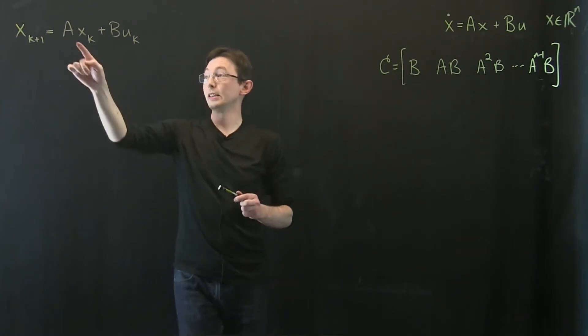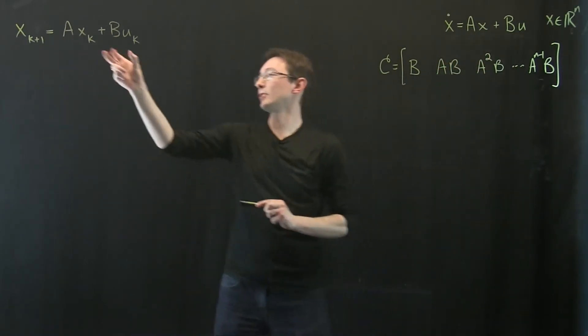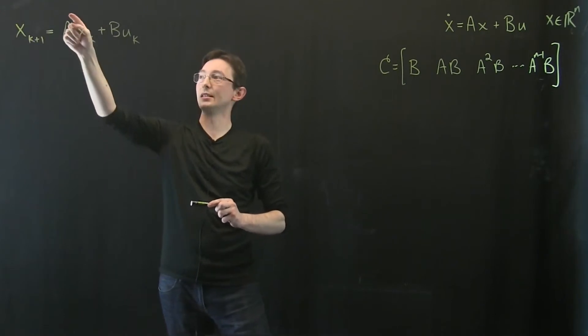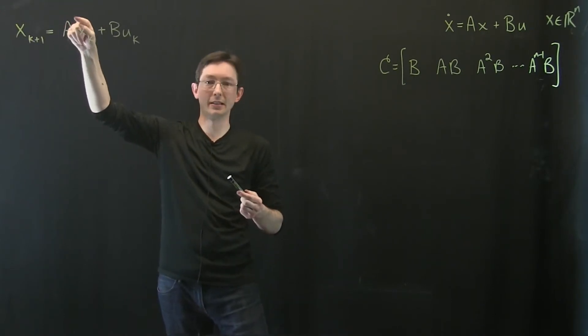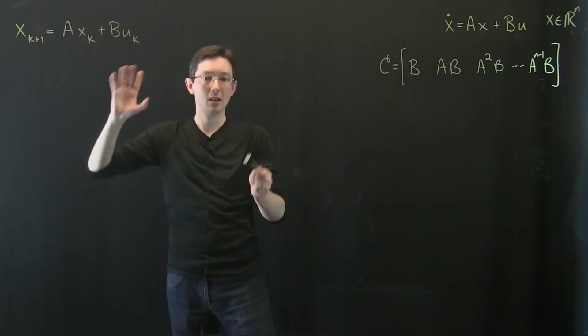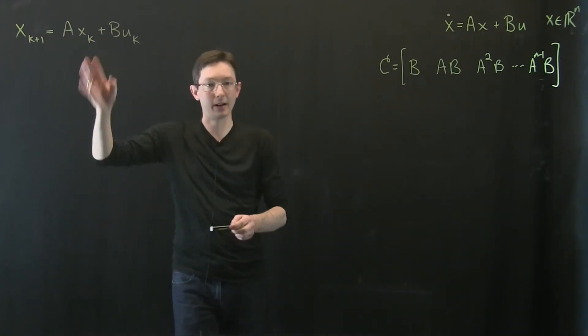Now remember this a and this b are not the same as this a and this b. These are my discrete time matrices. If I was going to be really careful I might put like a tilde or a hat on these but that's going to take a lot of time so I'm just going to write it out like this.